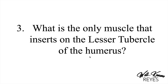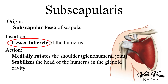Last question: what is the only muscle that inserts on the lesser tubercle of the humerus? If you said subscapularis, you are correct. The subscapularis is the only rotator cuff muscle that inserts at the lesser tubercle. Supraspinatus, infraspinatus, and teres minor all insert at the greater tubercle of the humerus. Make sure you know that.